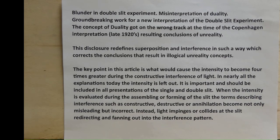A key point in this article is what would cause the intensity to become four times greater during constructive interference of light. In nearly all the explanations today the intensity is left out. It is important and should be included in all presentations of the single and double-slit. When the intensity is evaluated during the assembling or forming of the slit, the terms describing interference such as constructive, destructive, or annihilation become not only misleading but incorrect. Instead, light impinges or collides at the slit, redirecting and fanning out into the interference pattern.